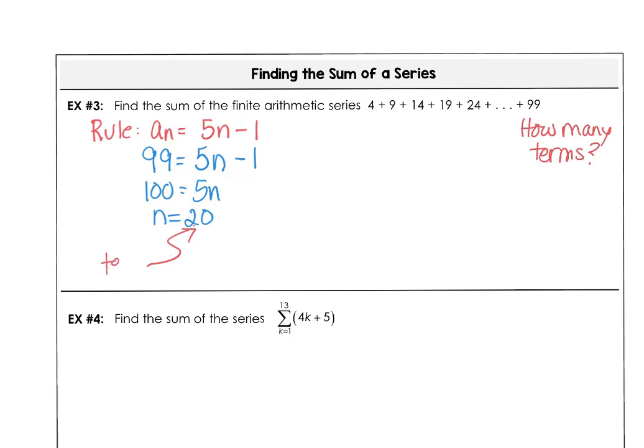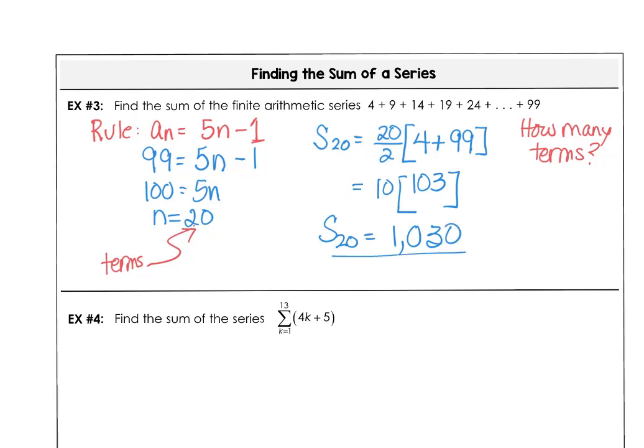So this is the number of terms. I took 4 minus 5, which is our difference. This is my C value from our last lesson. That's how I got that minus 1 there. To add up the sum of the series, we want the sum of the first 20 terms. So it's 20 divided by 2, and we're going to add up 4, the first term, and 99, the last term. That's 103. 20 divided by 2 gives us 10. 10 times 103 tells us that the sum of the first 20 terms in the series is 1,030.